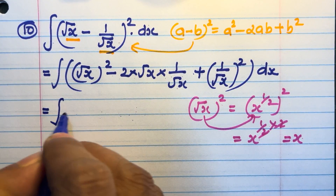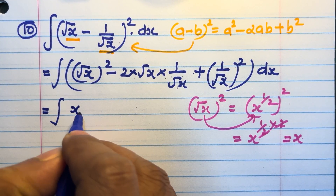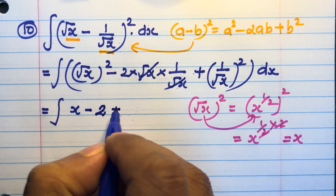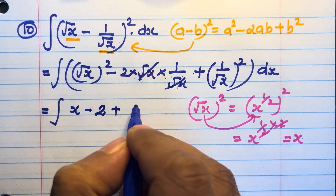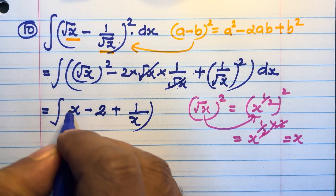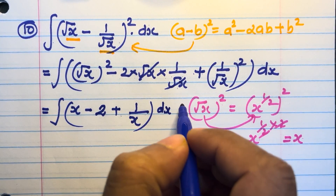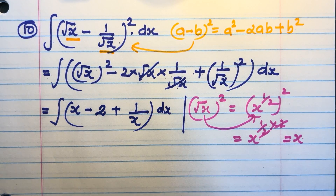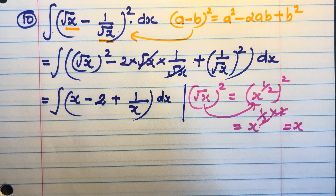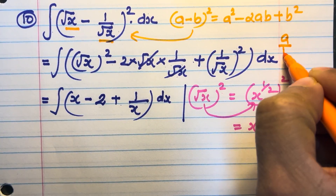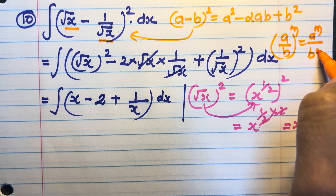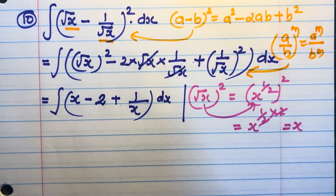So the expression becomes integral of x − 2 + 1/x dx. The √x terms cancel in the middle term, leaving −2. For (1/√x)², we apply the law (a/b)^m = a^m / b^m, giving 1² / (√x)² = 1/x.